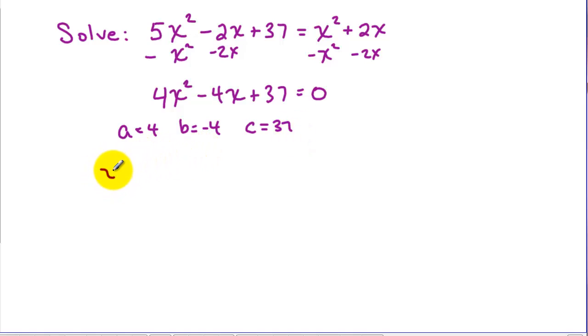So if we put it into the quadratic formula, we've got negative b or opposite of b, plus or minus square root. Now here we have b squared, so negative 4 squared is 16. And then we have minus 4 times a, which is 4 times 37. And that's all over 2 times 4. So now we have to calculate here.